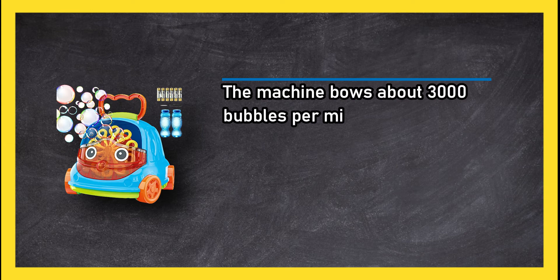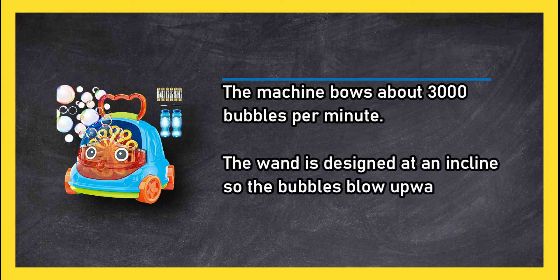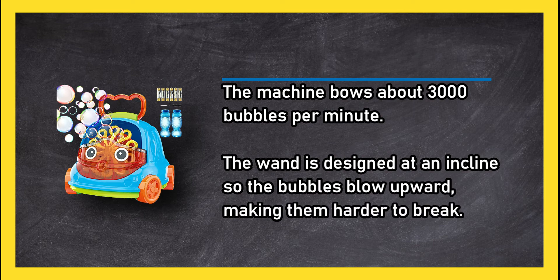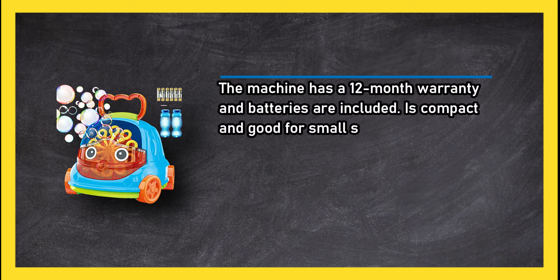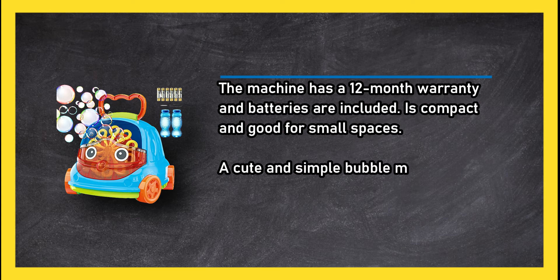The machine blows about 3,000 bubbles per minute. The wand is designed at an incline, so the bubbles blow upward, making them harder to break. The machine has a 12-month warranty, and batteries are included. It is compact and good for small spaces—a cute and simple bubble maker suitable for children.